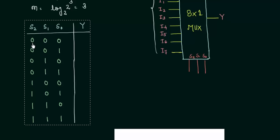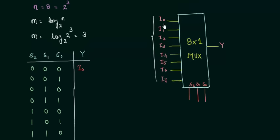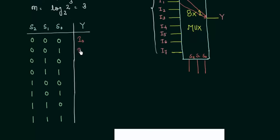So when all these 3 s2, s1 and s0 are 0, y is equal to i0. i0 will be routed to the output in this case. Similarly, when s2 and s1 are 0 and s0 is 1, i1 is routed to the output. So I will complete this table now.